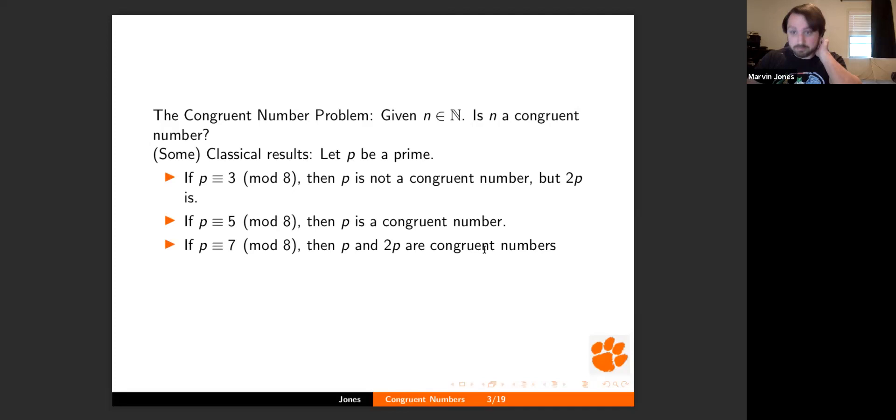So the congruent number problem is now just if I am given a natural number is it a congruent number. And you could just play with a bunch of rational numbers and hope for the best, but that seems like a very poor life choice and not very interesting because that's even worse than brute force. But there are some classical results, which I snagged from Wikipedia because I'm not as familiar with the classical results.